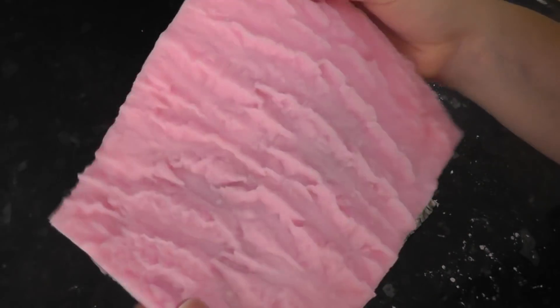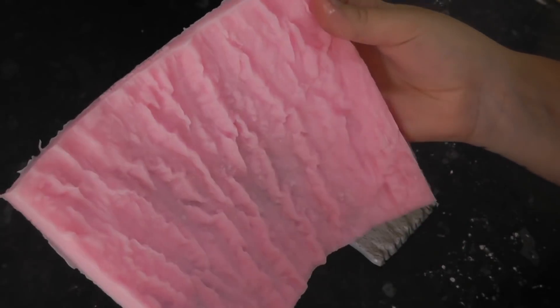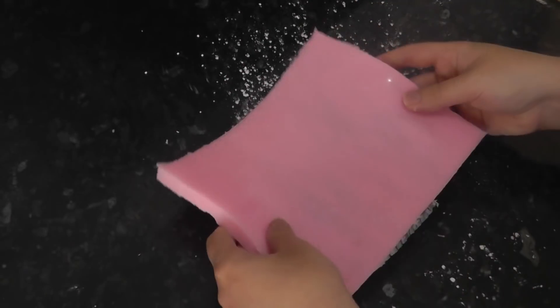An optional step is to use a bark impression mat. If I find it, I will link it below, but scrunched tin foil or a dresden tool works just as well.